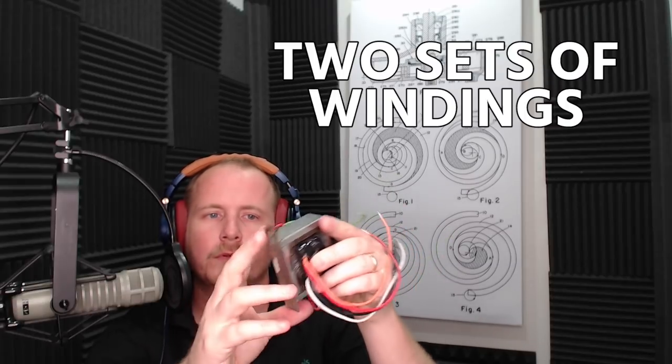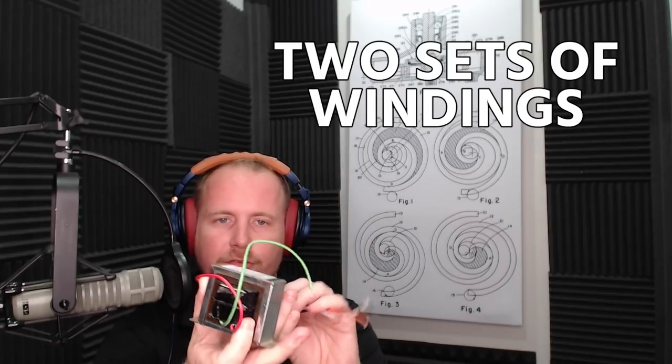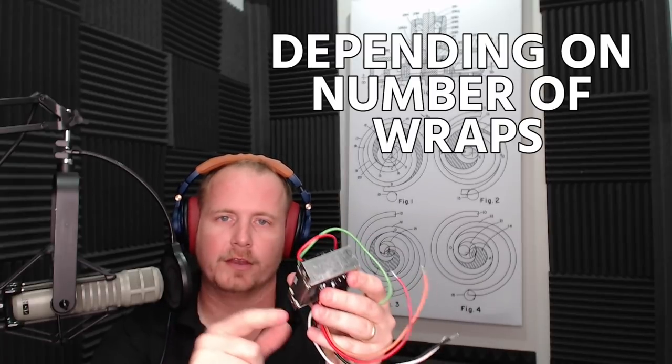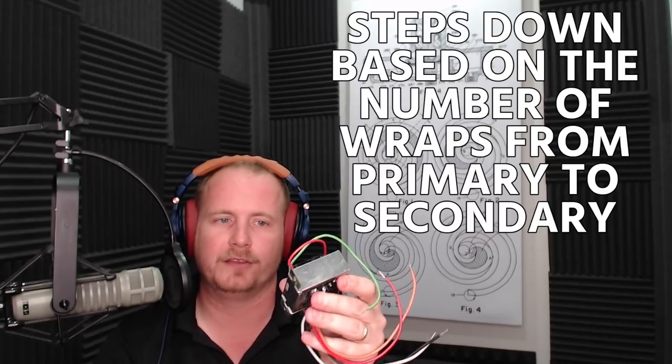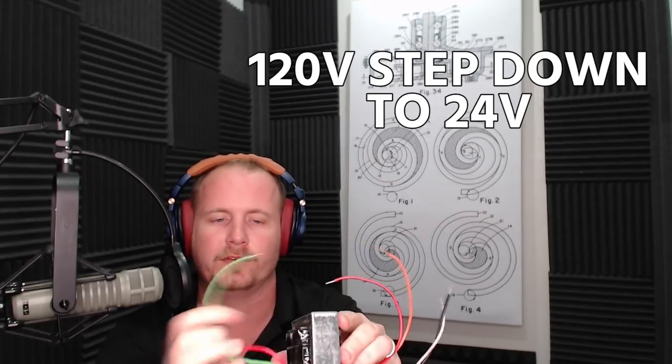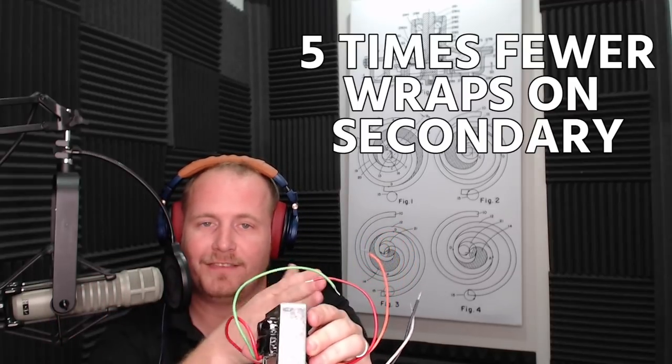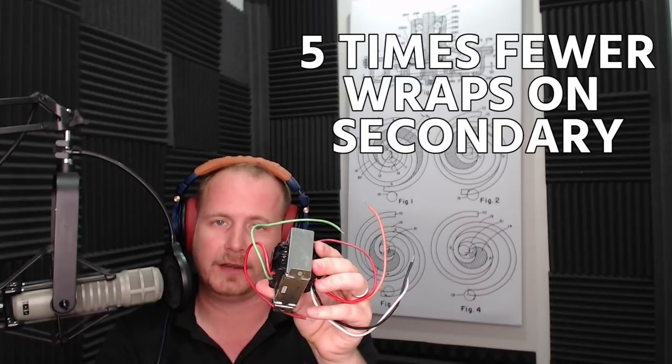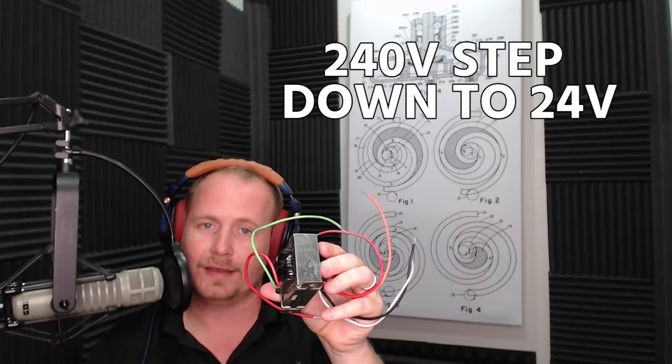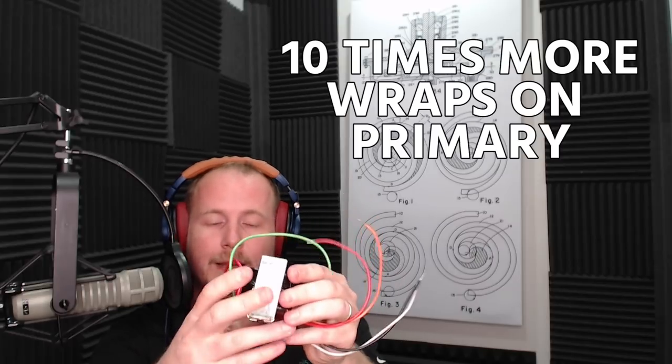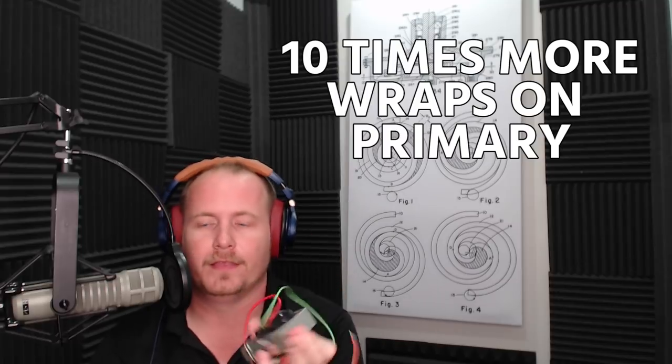The way this works is actually very simple. There's two sets of windings in here. I actually did a separate video where I tore one apart, but you have two separate windings in here. And depending on the number of wraps, it steps down based on the number of wraps, primary to secondary. So in the case of this one, if I was going from 120 volts down to 24, that's five times less. So it'd have five times fewer wraps on the secondary of wire than there would be on the primary side. If 240 down to 24, that's 10 times. So 10 times more wraps on the primary wraps of wire on the inside of this transformer than there is on the secondary.